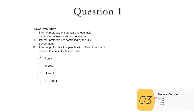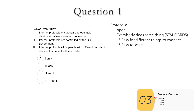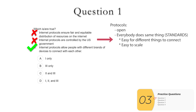Here are some practice questions. Question one — which are true? One: internet protocols ensure fair and equitable distribution of resources. Two: internet protocols are controlled by the US government. Three: internet protocols allow people with different brands of devices to connect with each other. Protocols are either open or they establish standards for connectivity — everything else is nonsense. One has nothing to do with connecting or scaling. Two is false because protocols are open. Three is true — it's why we have protocols. Answer is B: three only.